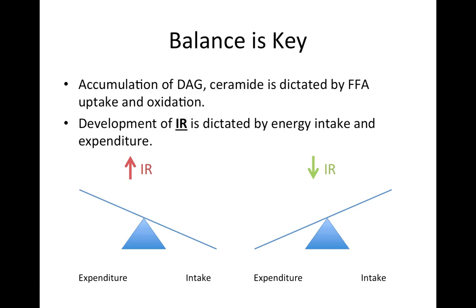On the left, you can see if intake outweighs expenditure, you will likely develop obesity and there's an increased risk of insulin resistance. This is a fairly gross simplification and certainly things can modify the response on each side. For instance, we know that saturated fats are inherently bad and may tip the balance in favor of insulin resistance, while the omega-3s consumed through fish oil can prevent the development of insulin resistance and tend to tip the balance in the other direction.